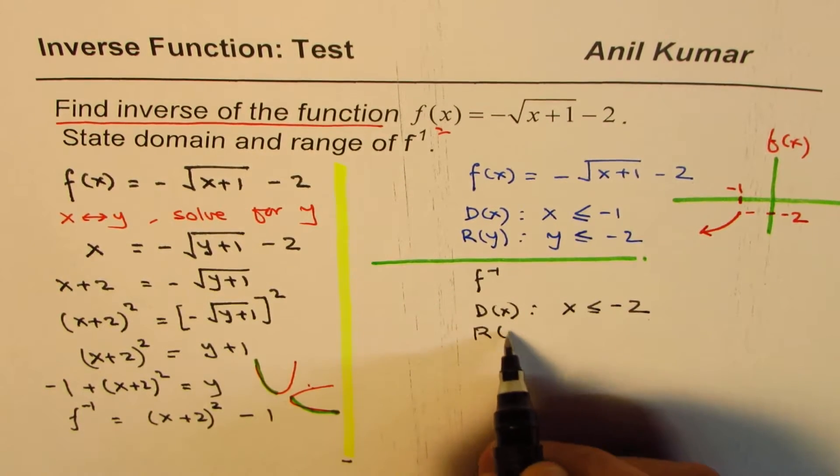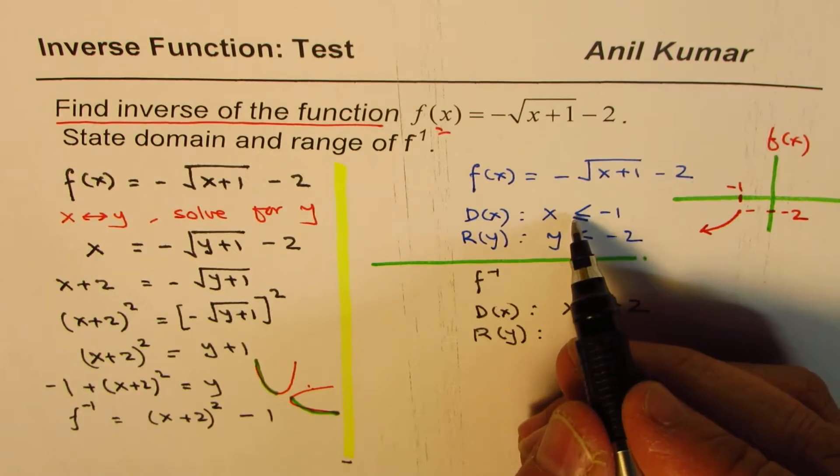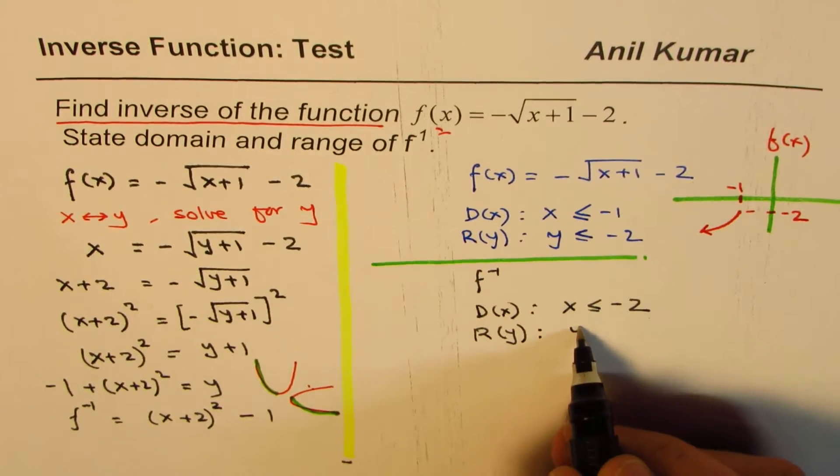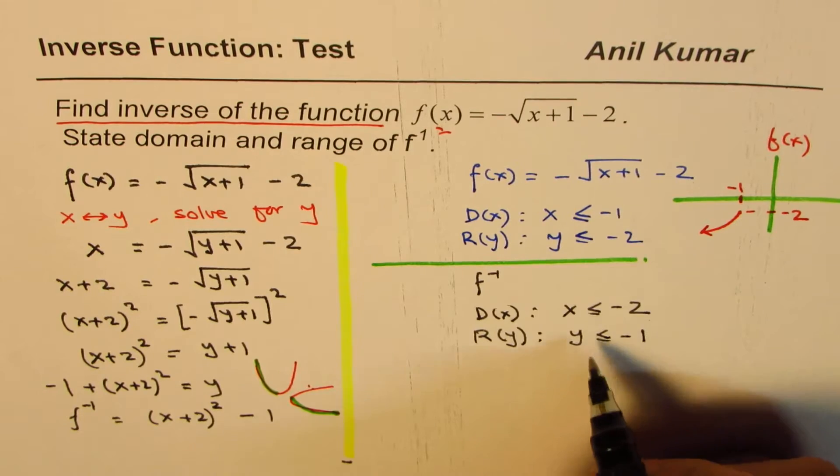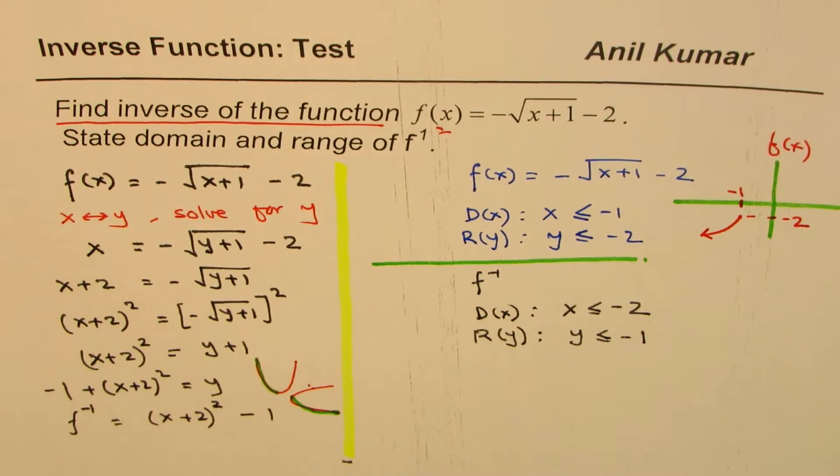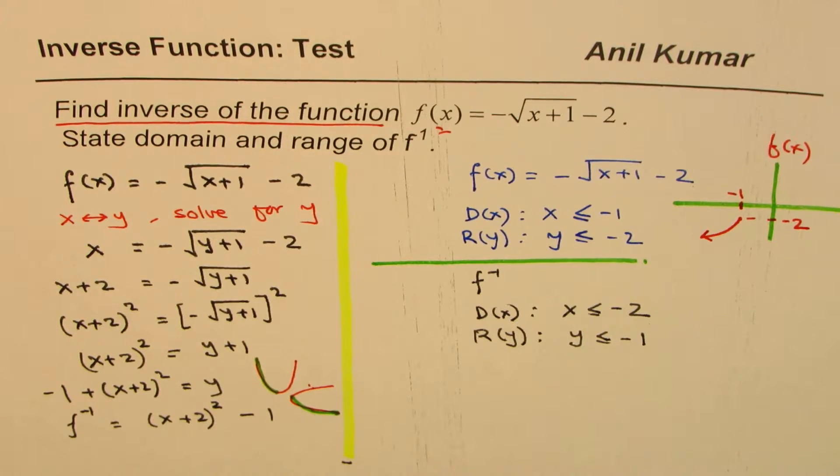As far as the range is concerned, range will be the domain of the function, which will be y is less than equals to minus 1. This is because these two functions are inverse of one another, right? So they have to be reflected on the line y equals to x. You have to swap x and y. Perfect.